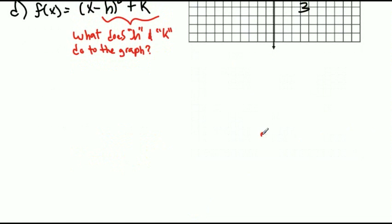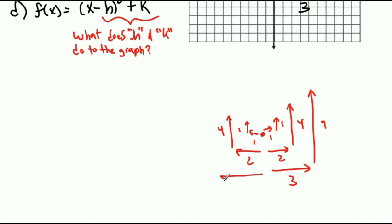And that is that from the vertex, we're going to go over 1, up 1, then over 2, up 4, then over 3, up 9. And notice that if you square 1, you get 1. If you square 2, you get 4. If you square 3, you get 9. So this pattern is actually very important.